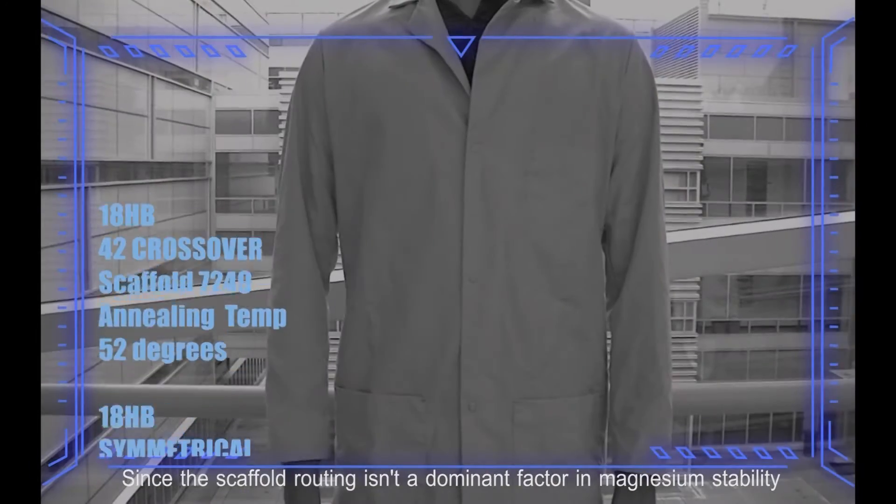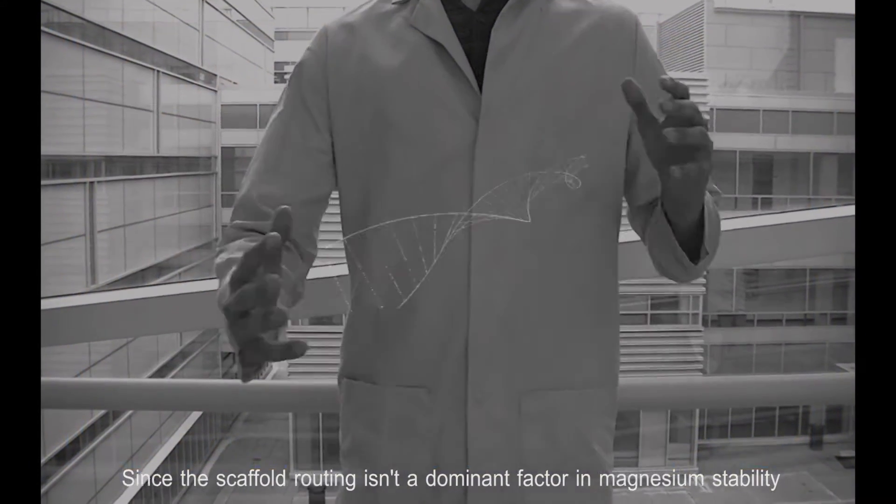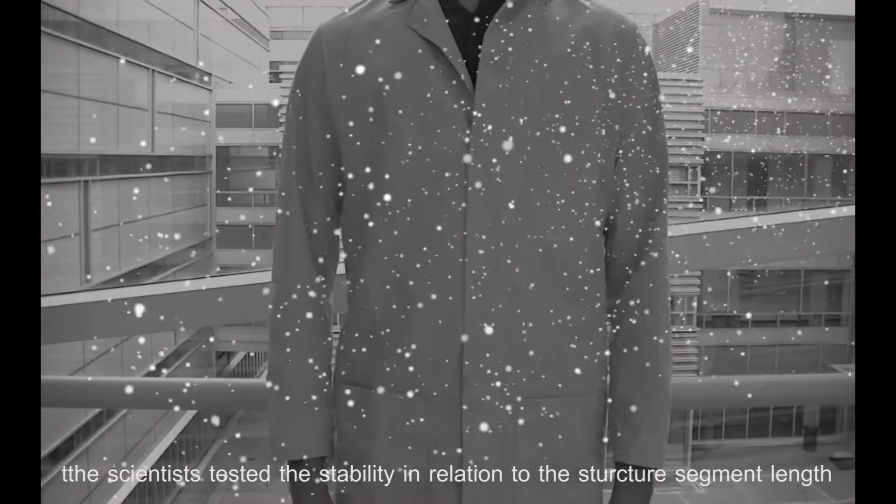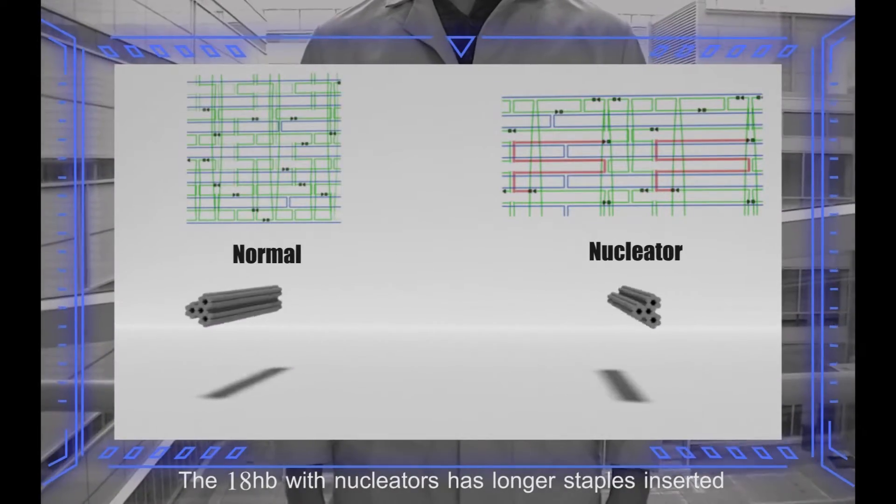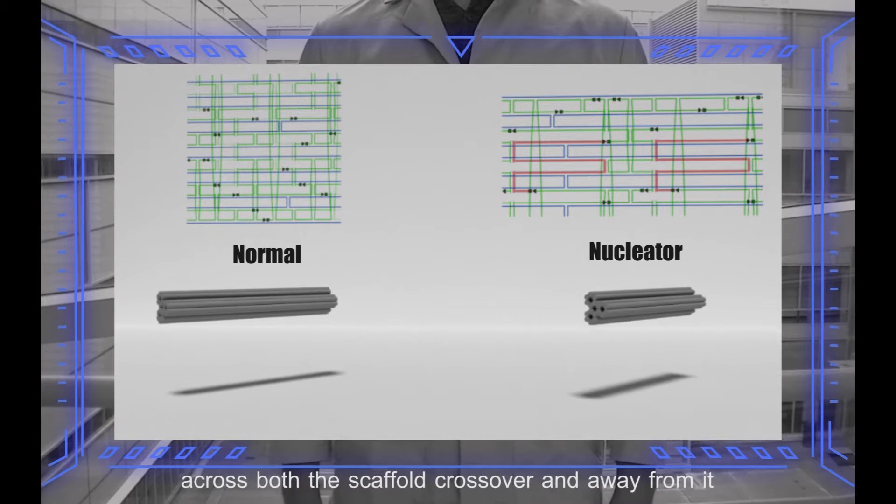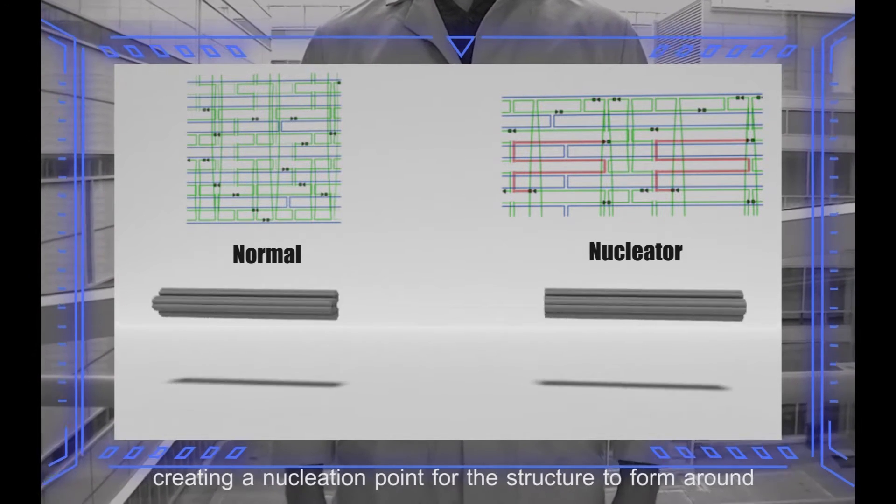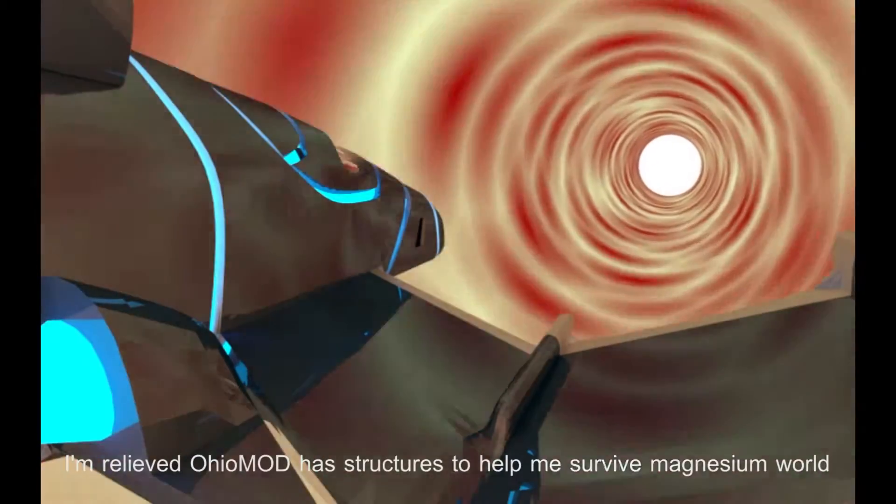Since the scaffold routing isn't a dominant factor in magnesium stability, the scientists tested the stability in relation to the structure segment length. The 18 helix bundle with nucleators has longer staples inserted across both the scaffold crossover and away from it, creating a nucleation point for the structure to form around. I'm relieved OhioMod has structures to help me survive Magnesium World.